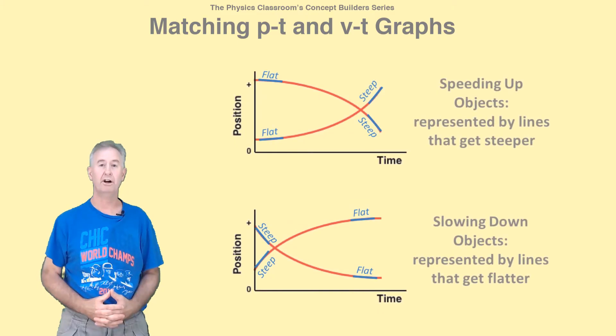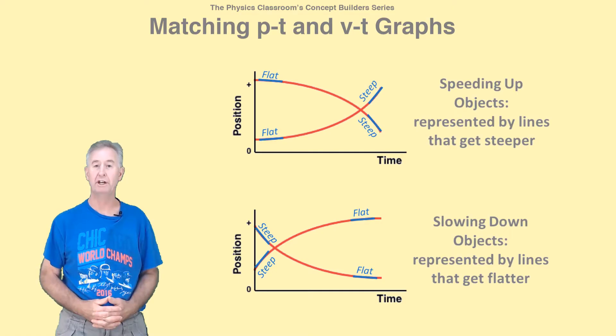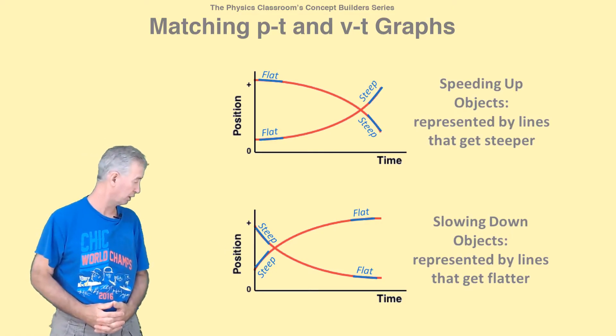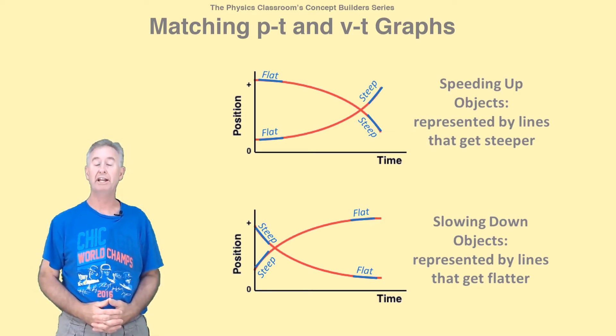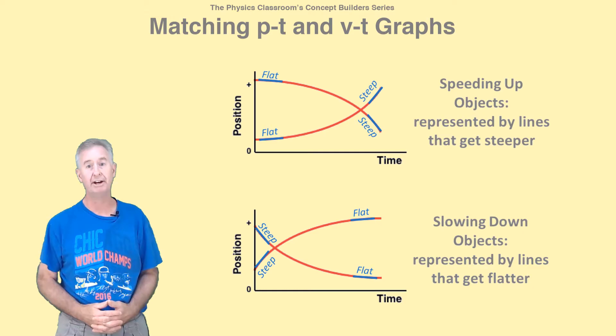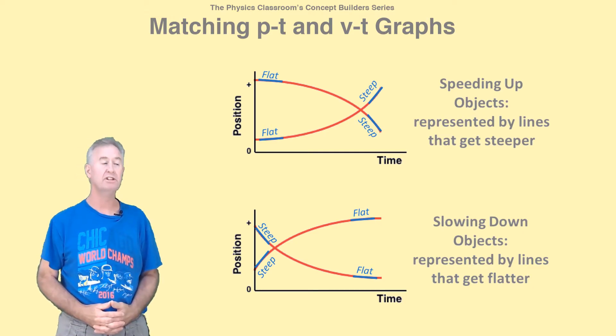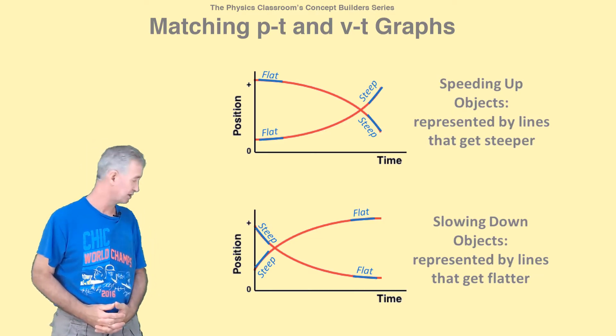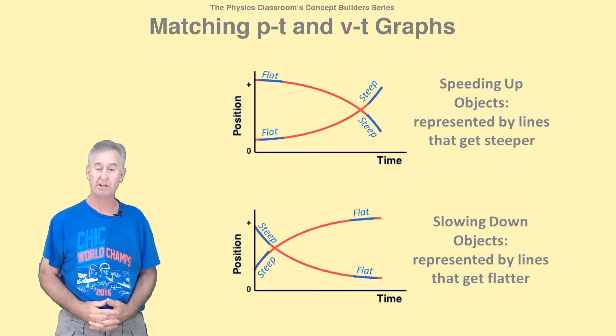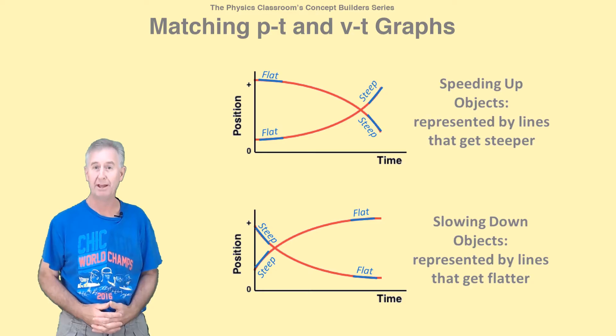Changing speed objects are either speeding up or slowing down. So begin at an early point on the graph and read towards the right. Observe whether the line is becoming steeper or flatter. A line that becomes steeper over the course of time represents a speeding up object. Lines that become flatter over the course of time represent slowing down objects.